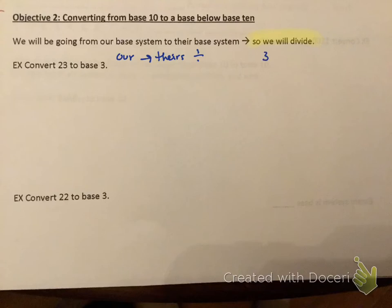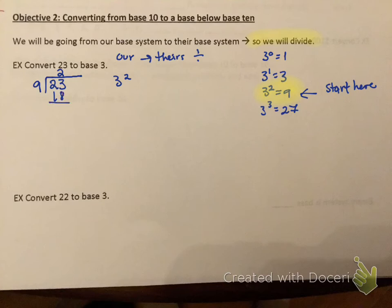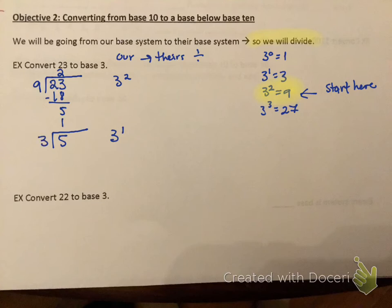Convert 23 to base 3. Going from ours to theirs means we divide. I write out: 3 to the 0 is 1, 3 to the 1st is 3, 3 to the 2nd is 9, 3 to the 3rd is 27. Since 27 is too big for 23, I start at 3 to the 2nd which equals 9. I take 23 and divide by 9 — 9 goes into 23 twice. 9 times 2 is 18, and 23 minus 18 is 5. I bring that remainder down, drop to 3 to the 1st. 3 goes into 5 once, giving a remainder of 2.